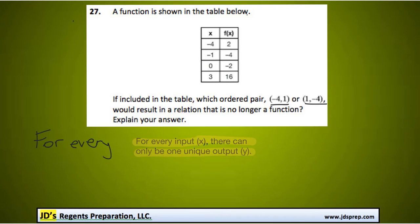Now, the output in this table is f of x, not y. So we can see the input of negative 4 gives us a value of 2, negative 1 gives us an output of negative 4, and so on.